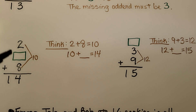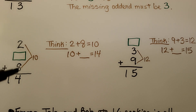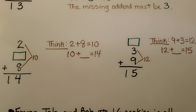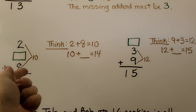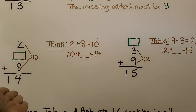Here we have two plus an unknown addend plus eight is equal to 14. We think two plus eight is equal to 10, and 10 plus what number is equal to 14? We can count on from 10: 11, 12, 13, 14 — that was four. Ten plus four is equal to 14.